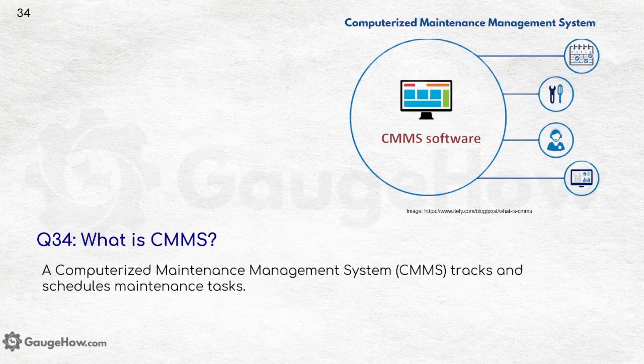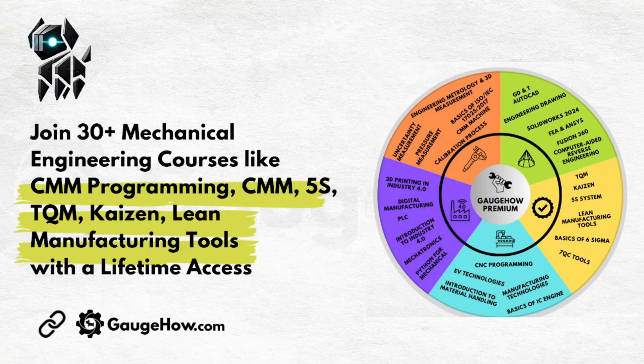What is CMMS? CMMS, that is Computerized Maintenance Management System, is a system which tracks and schedules maintenance tasks. Many companies use this for maintenance management. You can learn about CMMS programming, 5S, TQM, Kaizen, and Lean Manufacturing Tools through 30 plus mechanical engineering courses available with lifetime access by joining GageHow Premium.